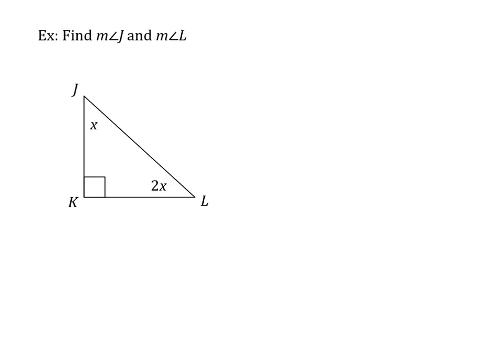Let's try an example problem. We're going to find the measure of angle J and the measure of angle L. We have a right triangle, and since it's a right triangle, we know angle K is 90 degrees, so angles J and L must add up to 90 degrees. I write my equation: X plus 2X equals 90 degrees. Combining like terms gives 3X equals 90. Dividing both sides by 3, I find X equals 30.